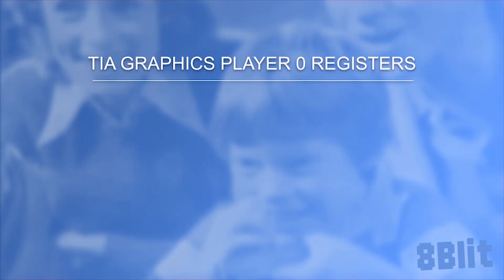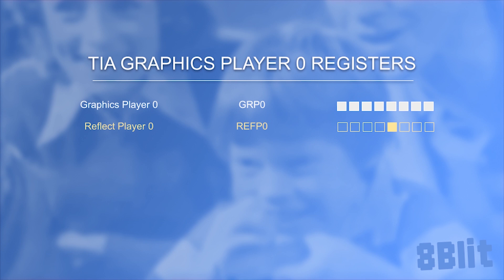Now that we know the theory behind positioning player graphics horizontally on the screen, let's have a look at how this can be implemented. Today we'll only focus on placing Graphics Player 0, because it's a pretty big topic in itself. The Graphics Player 0 register has 8 bits, which represent the pixels used to draw a single scanline of our player. Reflect Player 0 is turned on by setting the D3 bit — when on, the bits in our player graphic will be reversed, meaning it will use the least significant bit first. Reset Player 0 sets the horizontal position of the graphic to the current position of the beam on that scanline. This is a strobe register, so writing any value to this address will set the position.